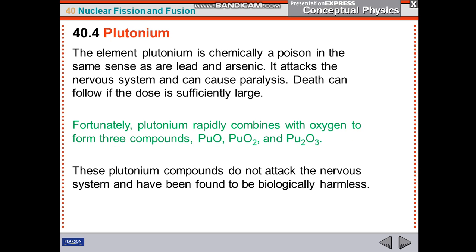The element plutonium is chemically a poison in the same sense as lead and arsenic. We are going to discuss some characteristics of plutonium. It attacks the nervous system and can cause paralysis. Death can follow if the dose is sufficiently large.